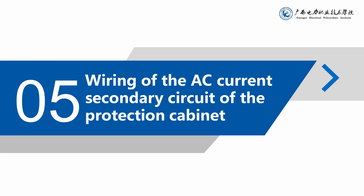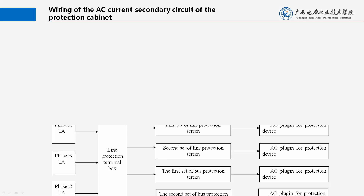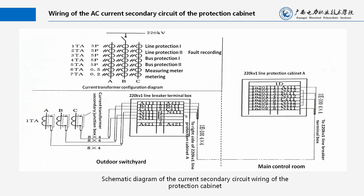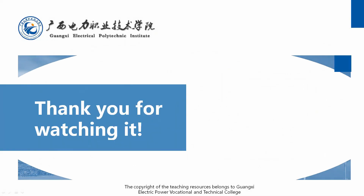Wiring of the AC current secondary circuit of the protection cabinet. Schematic diagram of the AC current secondary circuit wiring, and schematic diagram of the current secondary circuit wiring of the protection cabinet. Thank you for watching.